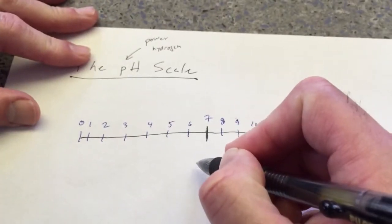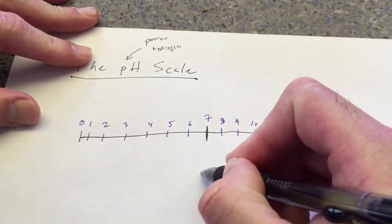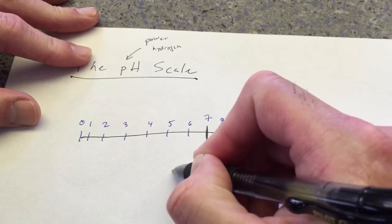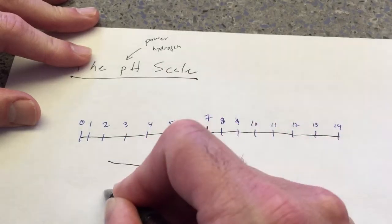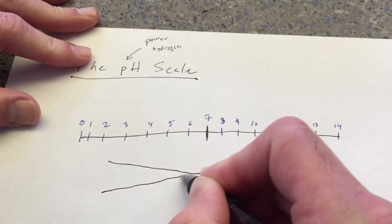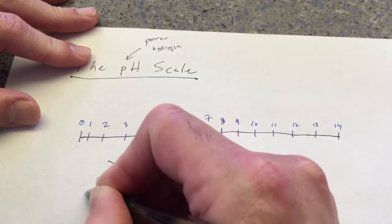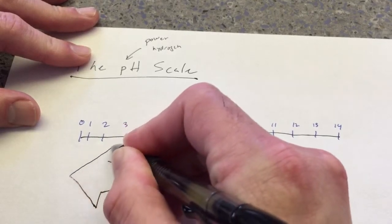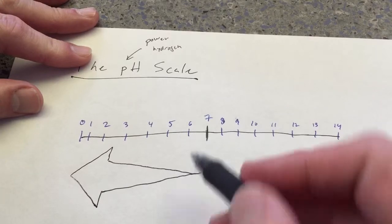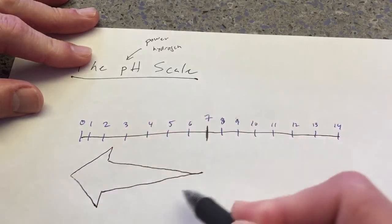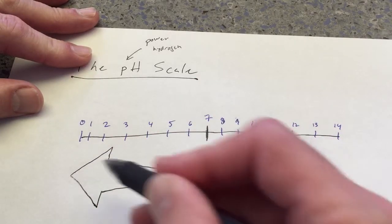And so we use the pH scale to describe how acidic something is. So from 7 down to 0, I'm going to draw an arrow, which increases like that.